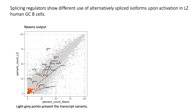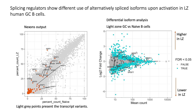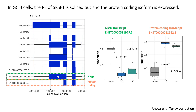Next, we further looked into the isoform usage of SR family members among the NEXONS-identified transcripts, and were able to see alternative isoform usage of SR family members between naive and light zone germinal center B cells. We checked the significance of differential splice isoforms using DREAMSEC, and indeed most of the differentially spliced isoforms were significantly alternatively spliced between naive and light zone germinal center B cells. When we checked the expression of these two transcripts across the three populations, we observed that the nonsense-mediated decay transcript was more upregulated in naive B cells. When B cells enter the germinal center, they lose expression of the NMD transcript and start expressing the protein-coding transcript of SRSF1, giving rise to SRSF1 protein expression.